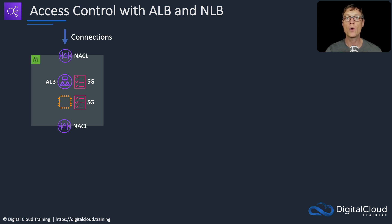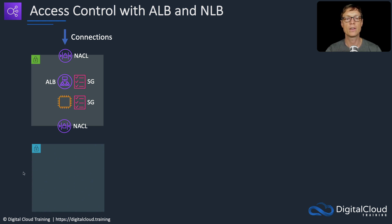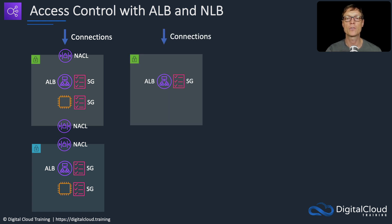We've also got a Network ACL. You only have one Network ACL per subnet, and it processes data coming in and going out — the ingress and egress from the subnet. We then have a private subnet that also has a NACL processing incoming data, plus an ALB with a security group and an EC2 instance in a security group — so we're load balancing to the front end and then to the application layer as well.